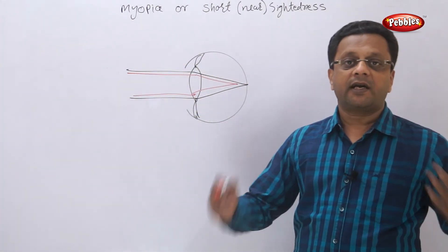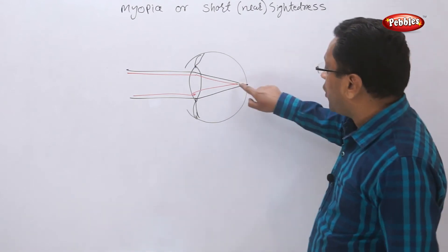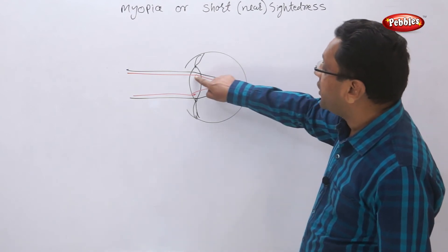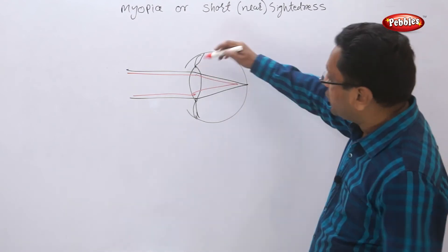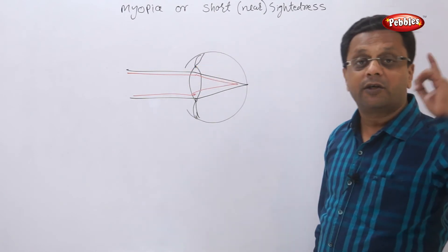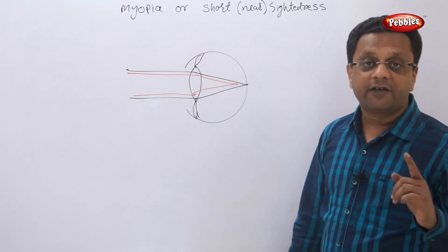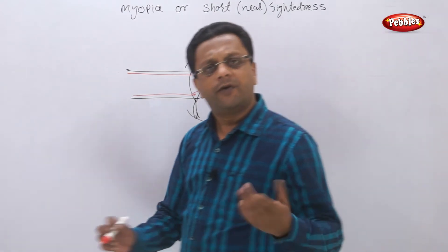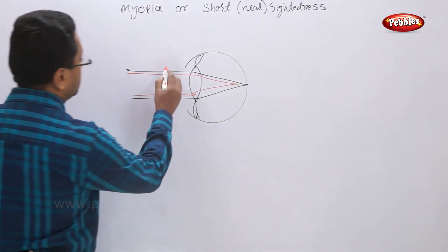So how do we correct it? If the image is forming here, what we have to do? This ray should come here instead of here. That means we want to diverge the light rays first. Now how is the diversion possible? Very simple. If you use a concave lens.